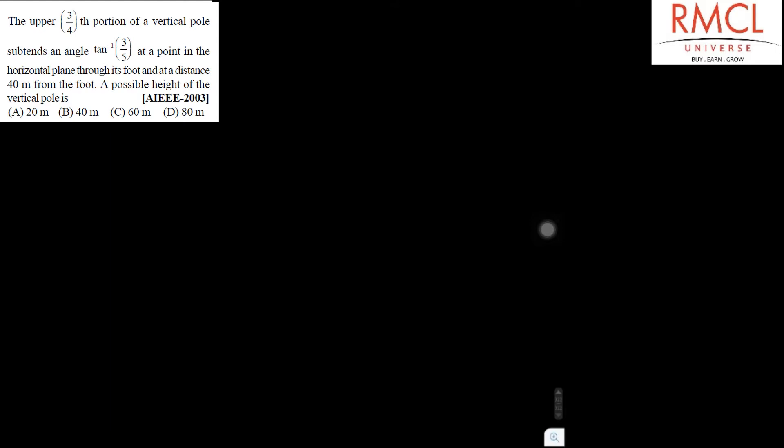And we have to find the height of the vertical pole. Suppose this is a pole and suppose its height is h. So its height is h and it is given that its upper three-fourth. So suppose this is three-fourth portion of this pole. And this is the point O.